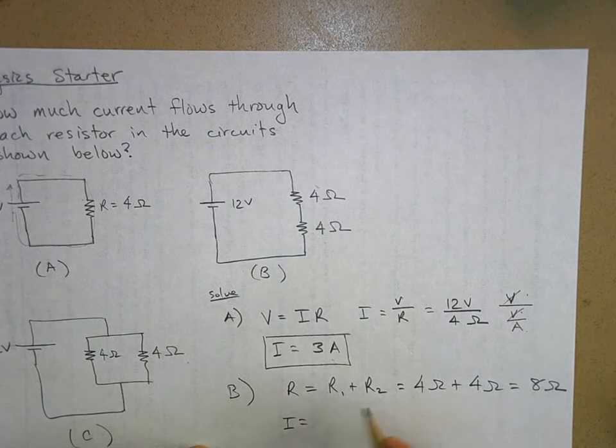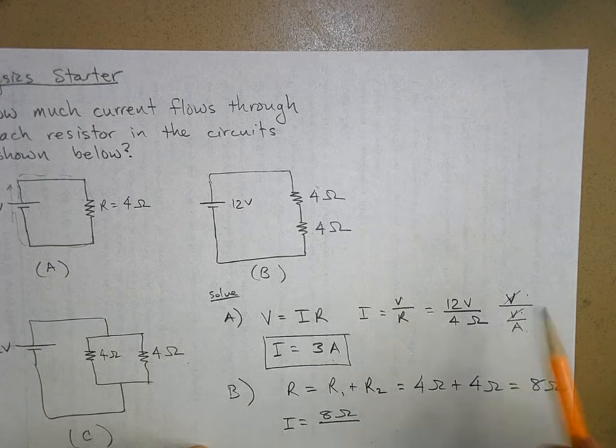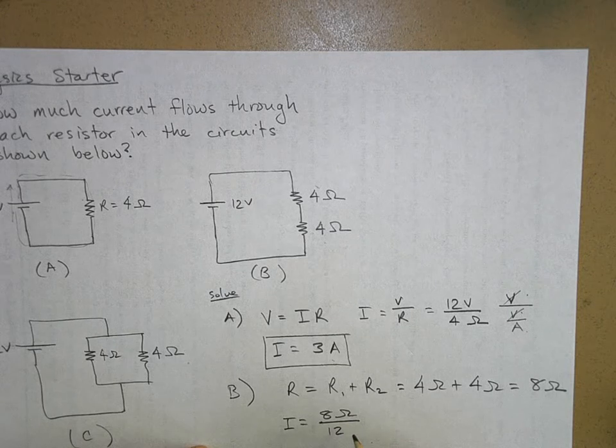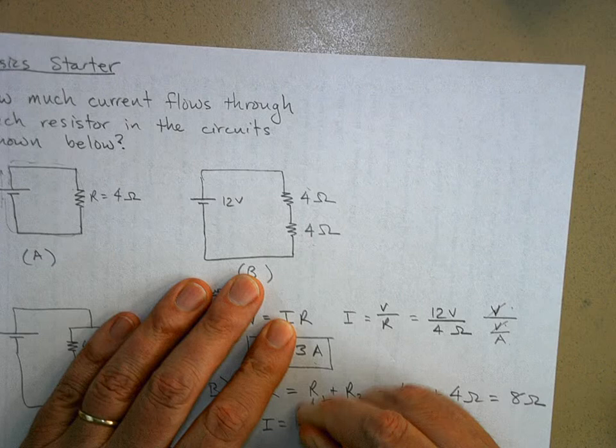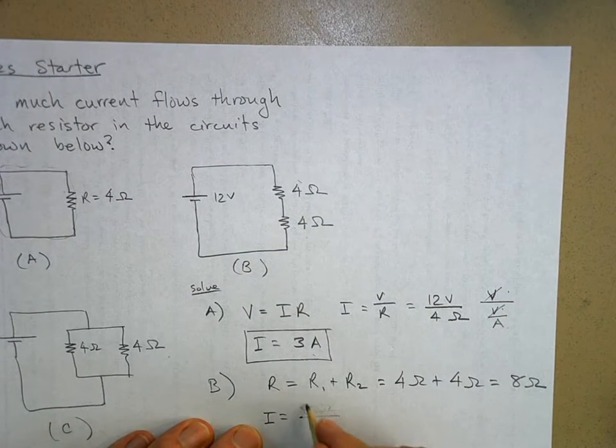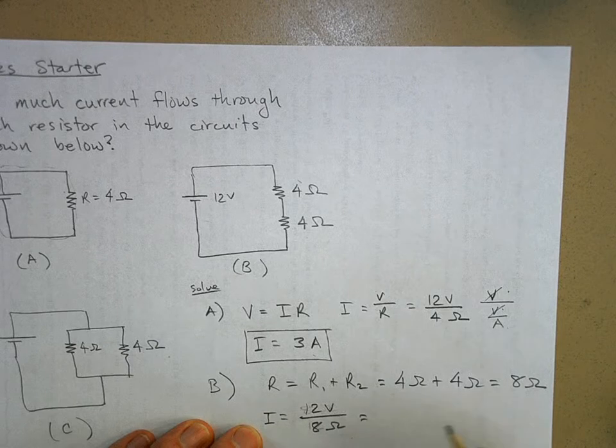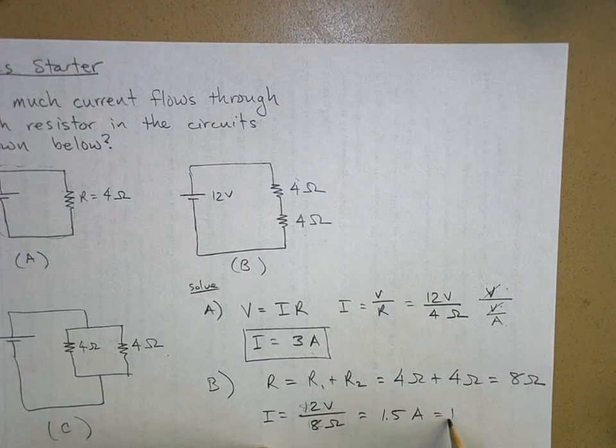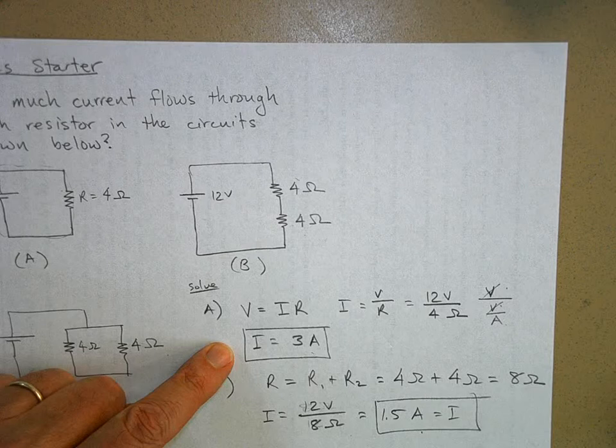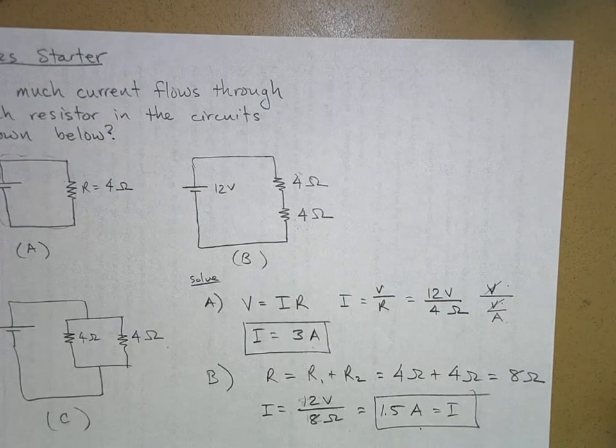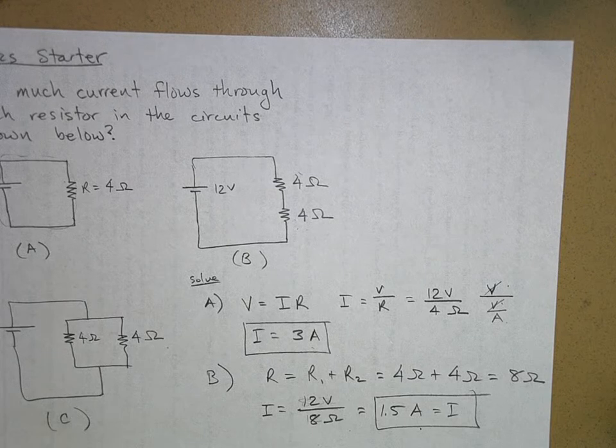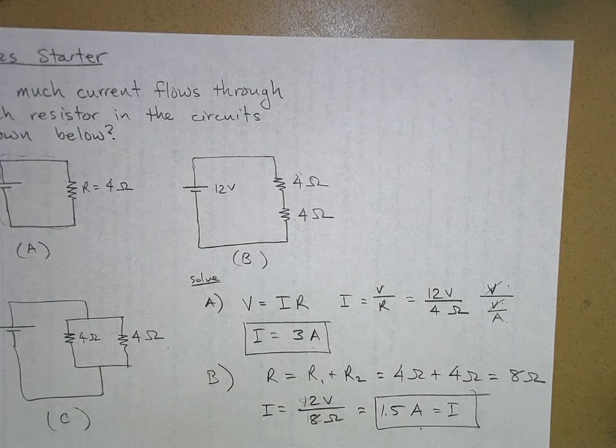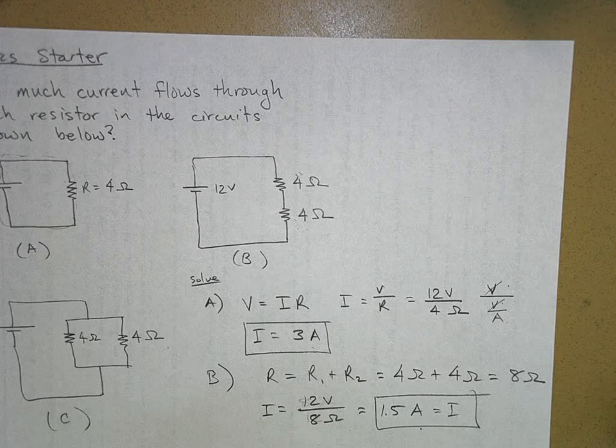So I is going to be equal to 12 volts over 8 ohms. And what is that? 1.5 amps. Now what do you notice about this current compared to the last current? It's half as big, because I've got twice as much resistance. So the same voltage gives me half the current. There's more resistance to that voltage, so you get less current flowing through the circuit. Pretty easy, I think.